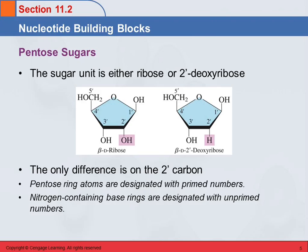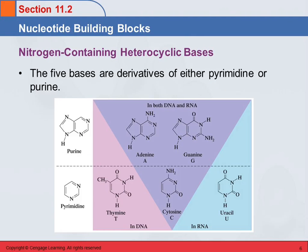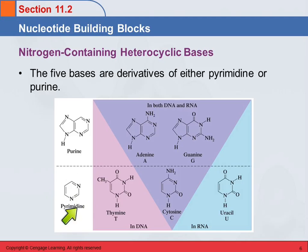The nitrogen-containing base rings are also numbered, but those numbers are just plain old numbers without primes on them. So those are the sugars involved, and these are the bases. We've seen these two molecules before — purine and pyrimidine. These are both heterocyclic amines. Pyrimidine is a six-membered ring with two nitrogens in it, and purine is two fused rings — a five-membered and a six-membered — and each of them has two nitrogens in them.